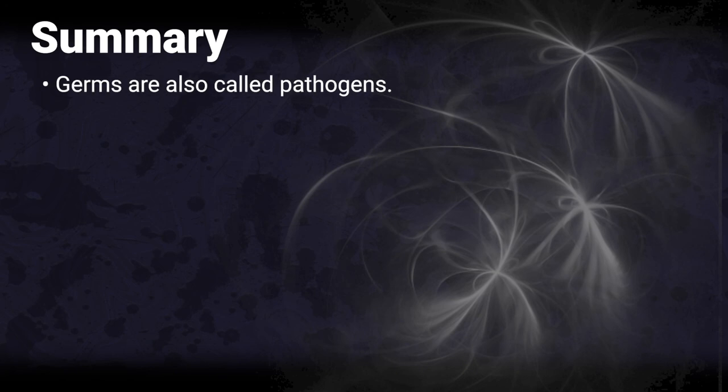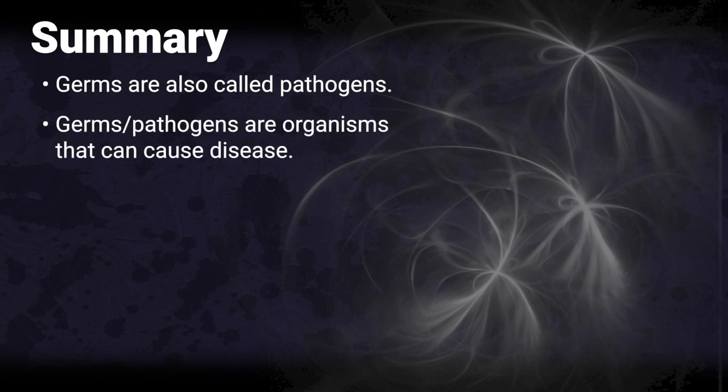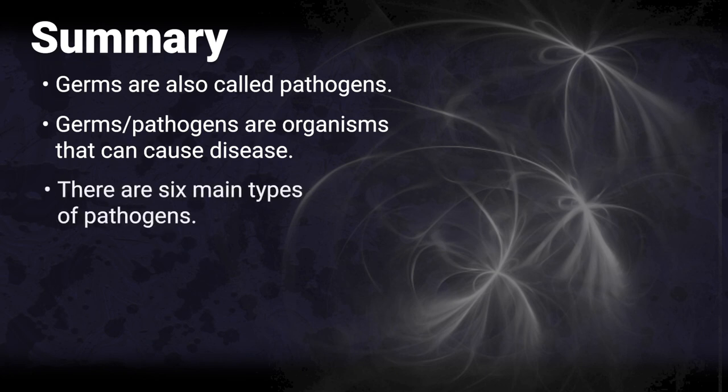Summary: Germs are also called pathogens. Germs, or pathogens, are organisms that can cause disease. There are six main types of pathogens.